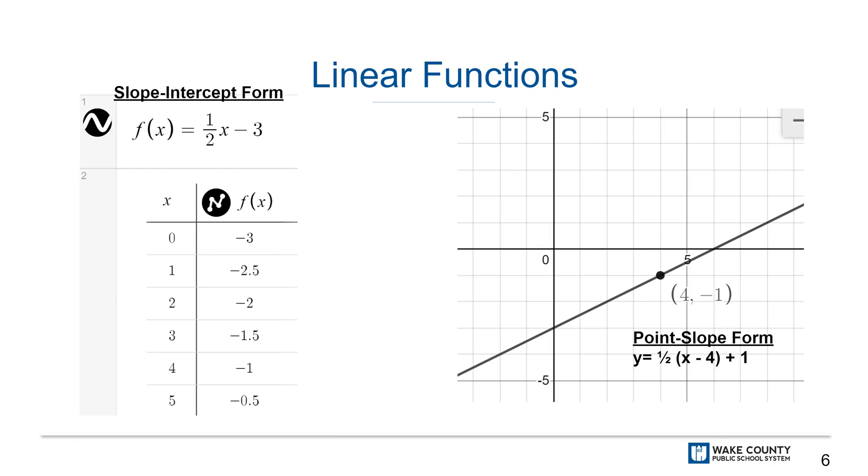Here is an example of a linear function written in slope-intercept form, along with a table and its graph. At the bottom, you can also see what point-slope form of this linear function would look like. We will learn about both forms in this unit, focusing primarily on slope-intercept form, but lessons 7 and 8 will introduce you to point-slope form as well.